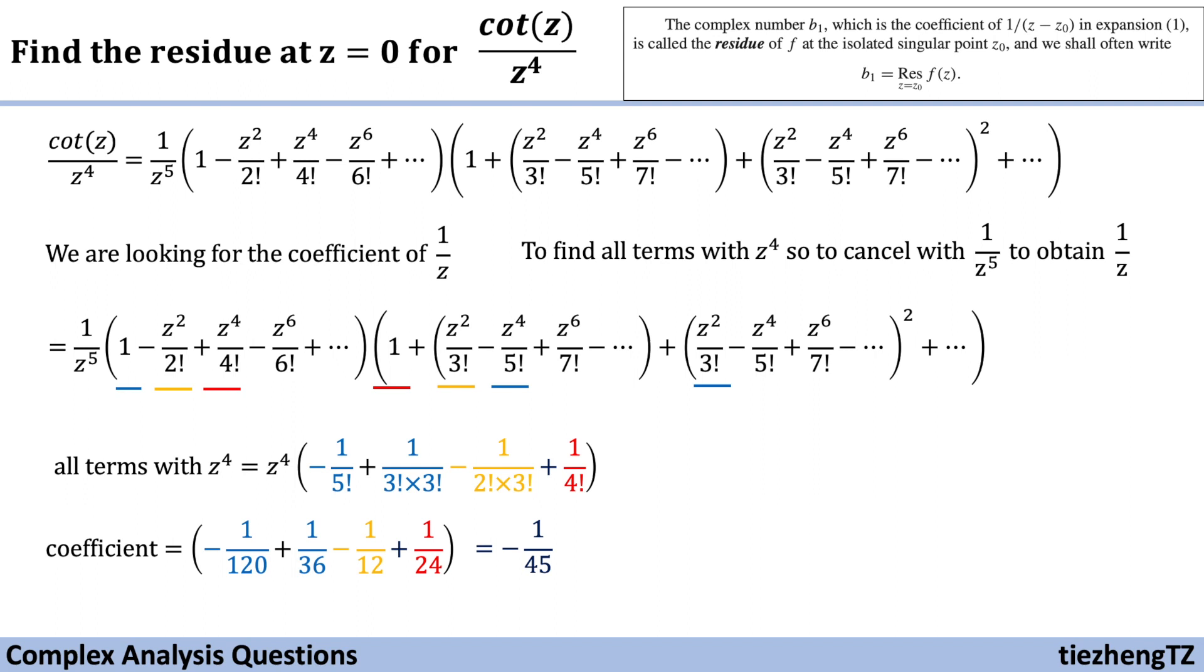Based on the definition, we know the residue at that isolated singular point, z equals 0 for the function cotangent z over z to the power of 4 is minus 1 over 45.